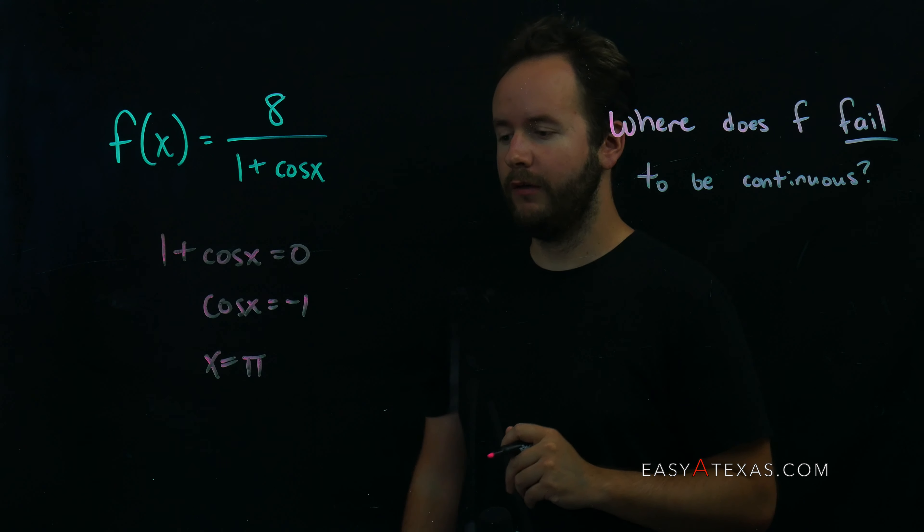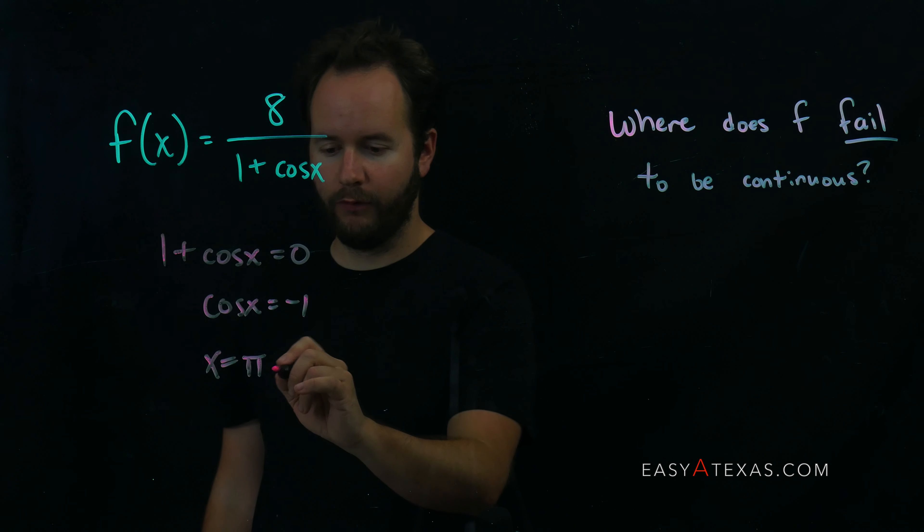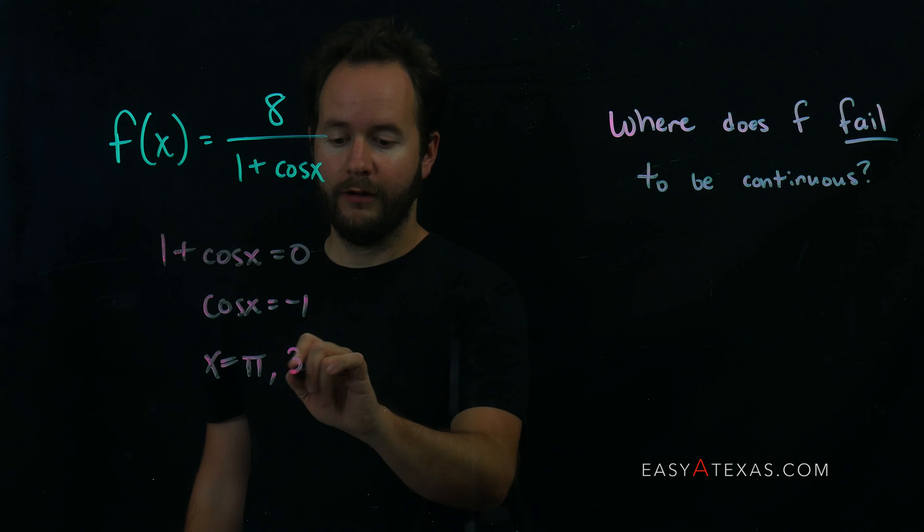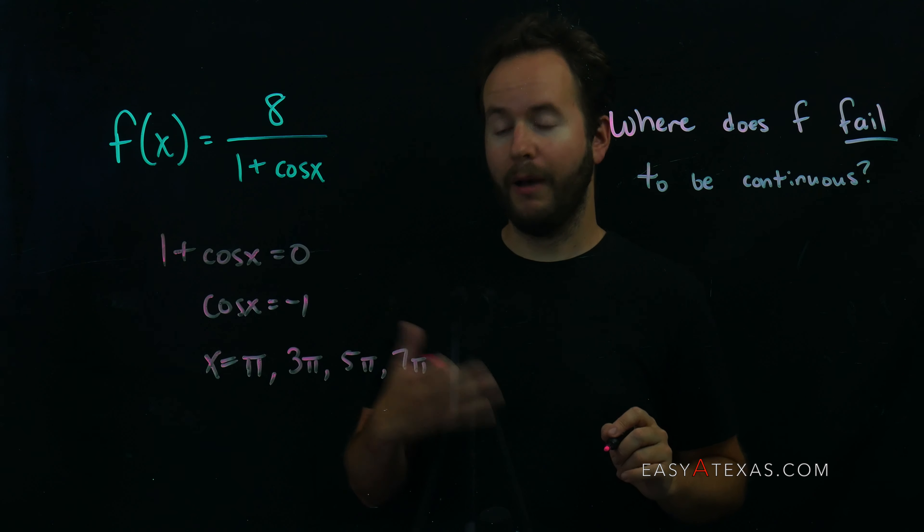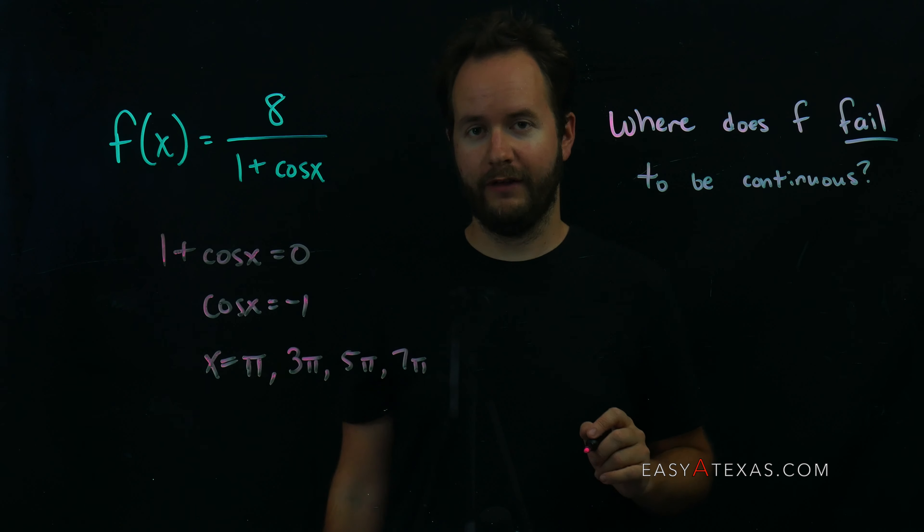So pi isn't just the only value of x which this is equal to negative 1. This also loops back around to be 3 pi and 5 pi and 7 pi. And any odd number pi will cause cosine of x to be negative 1.